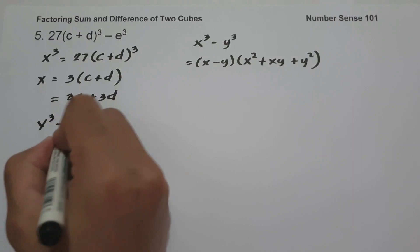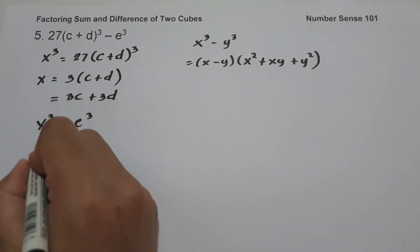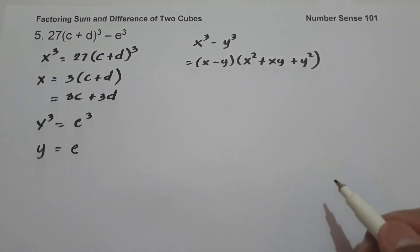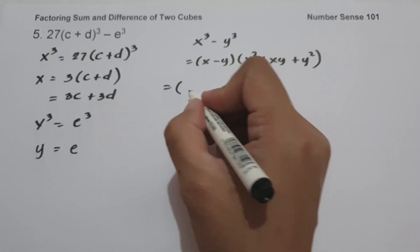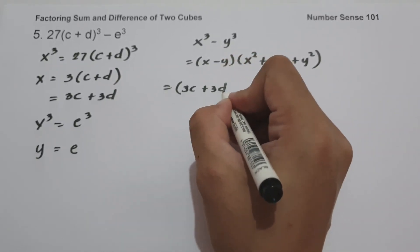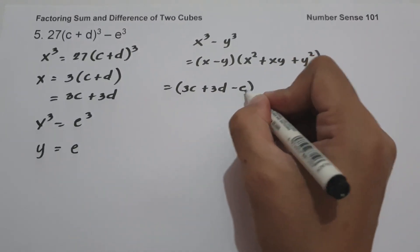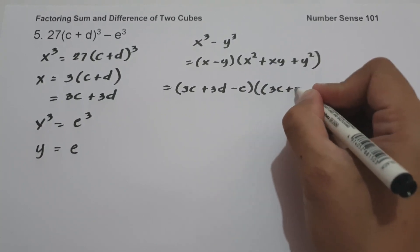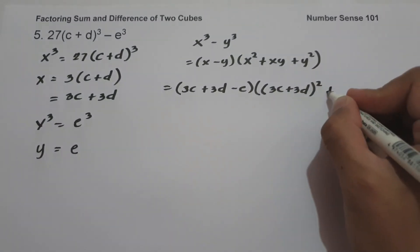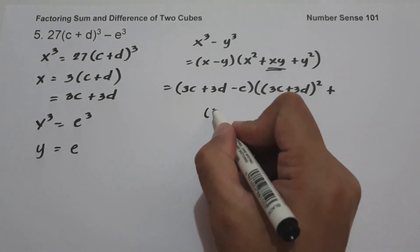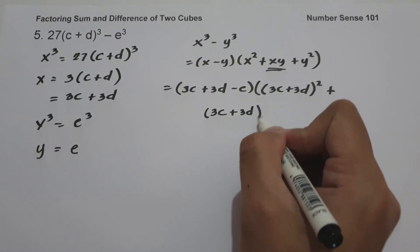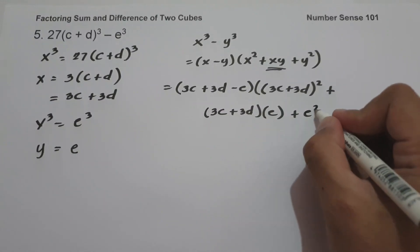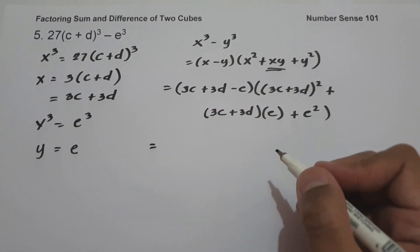Then y³ is the last term, e³. The cube root of e³ is e, so y = e. So we have x − y, which is (3c + 3d) − e, times x² = (3c + 3d)², plus x times y = (3c + 3d) times e, plus y² = e².